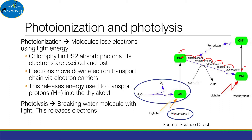Photolysis, which occurs simultaneously, describes a breakdown of water using light energy. This process too releases electrons. However, these are used to reduce Photosystem 2 — that is, provide the electrons lost by Photosystem 2 during photoionization.